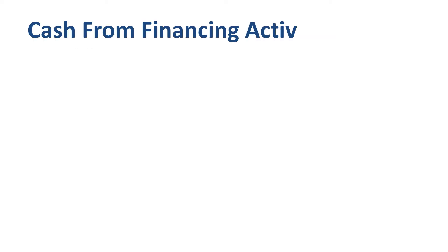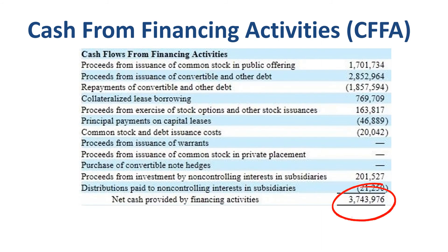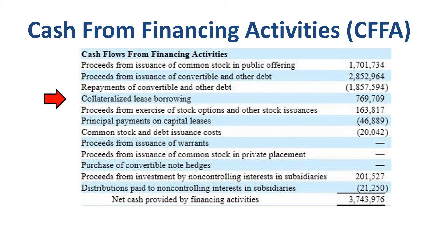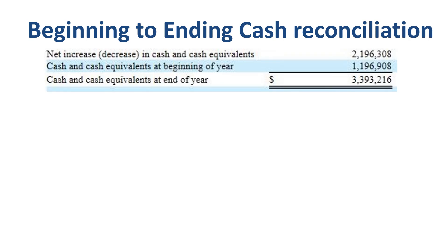Third section of the cash flow statement: cash from financing activities, a net cash inflow of $3.7 billion. This includes $1.7 billion from issuing common stock or equity, $1 billion as the net cash inflow between proceeds and repayments of convertible and other debt, and $769 million cash inflow from collateralized lease borrowing. Once you have the three sections — operating, investing, and financing — there is an important closing step: ensuring that the net increase in cash and cash equivalents of $2.2 billion plus the opening cash balance of $1.2 billion equals the ending cash balance of $3.4 billion. If you are studying for an exam or preparing cash flow statements in real life, please make sure you include this finishing touch.